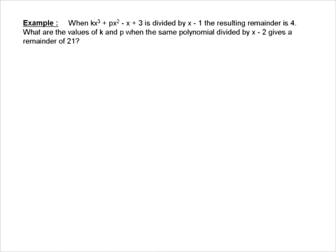So now we have this polynomial, kx cubed plus px squared minus x plus 3, and when it's divided by x minus 1, we know the remainder is 4. We want to determine what k and p are, when the same polynomial divided by x minus 2 gives a remainder of 21.